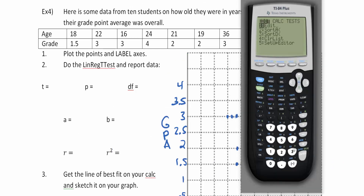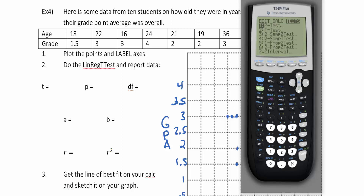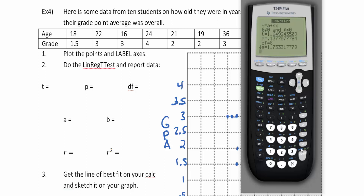Let's do the linear regression t-test. Hit STAT, ENTER to confirm data is in List 1 and List 2, then STAT → TESTS → LinRegTTest. All the defaults look good — just go to CALCULATE. We're skipping over the standard error of the estimate s; we'll cover that in the next section of this chapter.